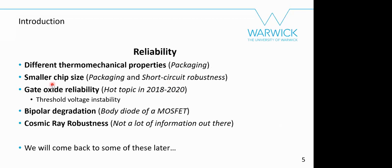Reliability topics include: different thermomechanical properties affecting packaging, smaller chip size related to packaging, short circuit robustness, gate oxide reliability (a hot topic in 2018–2020), threshold voltage instability, bipolar degradation from the parasitic body diode, and cosmic ray robustness. As silicon carbide targets aerospace and more-electric aircraft applications, people are starting to consider cosmic ray failures and radiation effects.